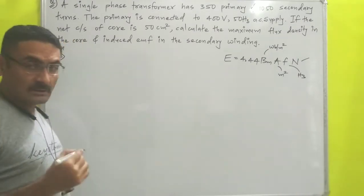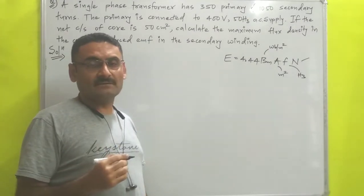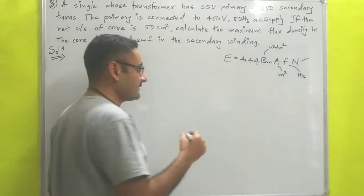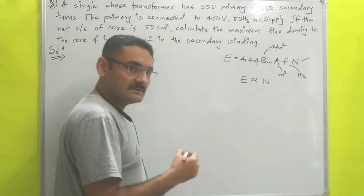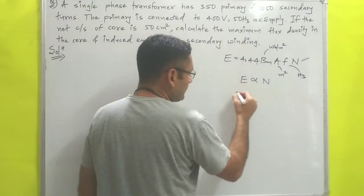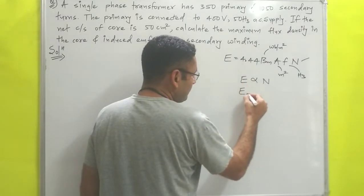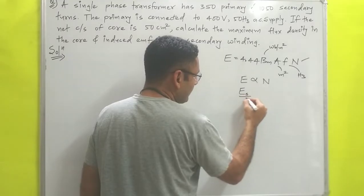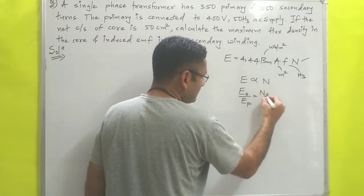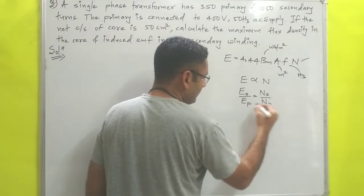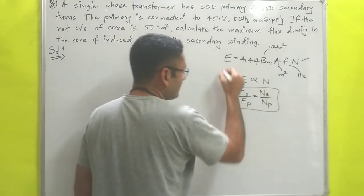Also in the construction and working of the transformer, we have concluded that EMF is directly proportional to number of turns. That means Es/Ep = Ns/Np, where Es is EMF in secondary coil, Ep is EMF in primary coil, Ns is number of turns in secondary coil, and Np is number of turns in primary coil.